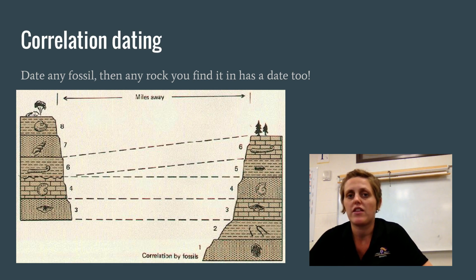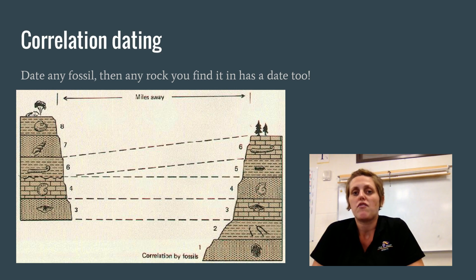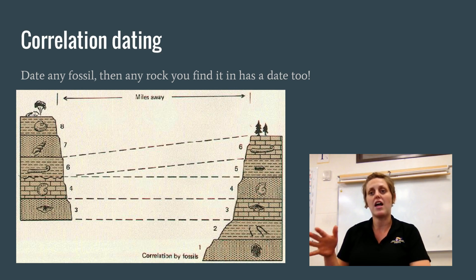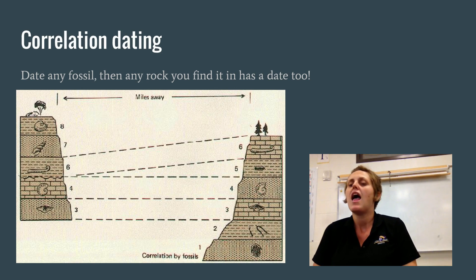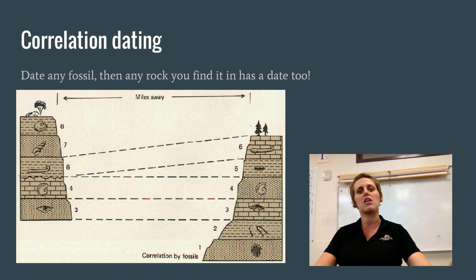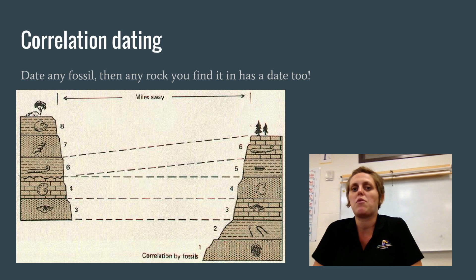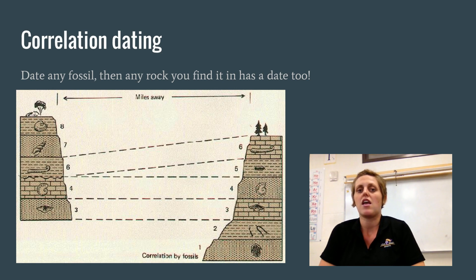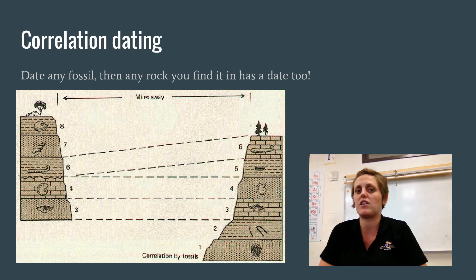Correlation dating is when you find the absolute date of any fossil — because most living organisms only live for a few million years. If you find a fossil and know it only lived 5 to 10 million years ago, any time you see it you know you are in a rock layer that is 5 to 10 million years old. Correlation dating can really help when there are things like erosion taking place in your strata, and you can figure out if you've missed a period of time.